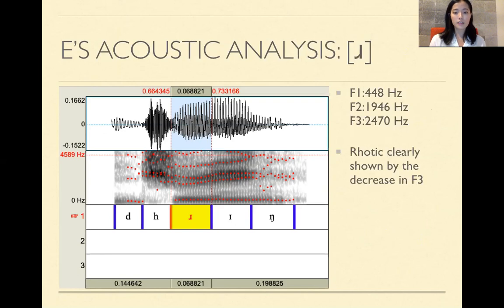And this is the /r/. So the F1 was 448 hertz, F2 is 1,946 hertz, and F3 is 2,470 hertz. And this /r/ is rhotic, clearly shown on the spectrogram side. So if you see the decrease in F3, you see that little depression there, where it goes, where it comes back up into the vowel.